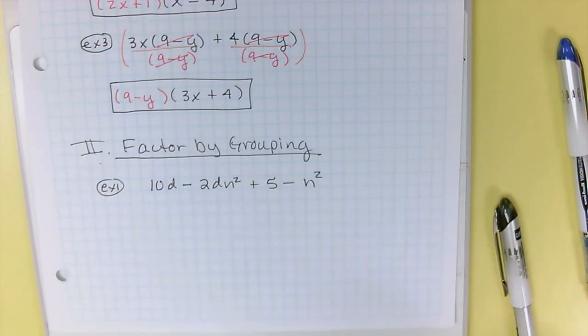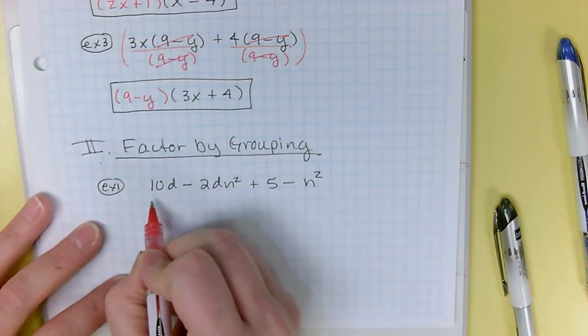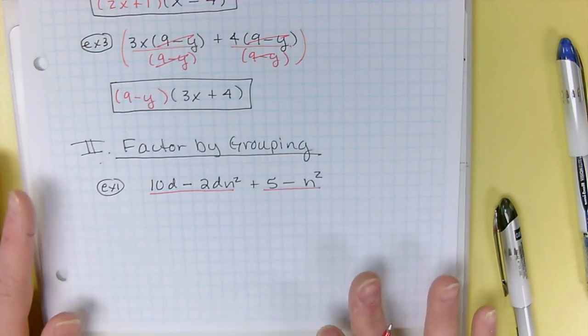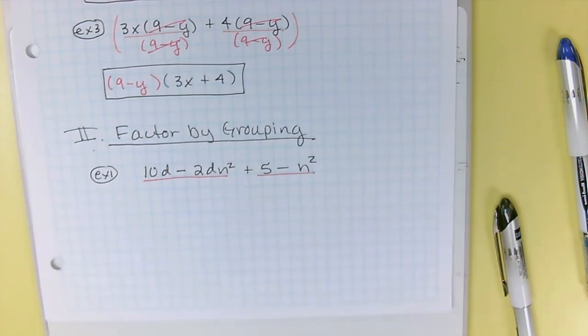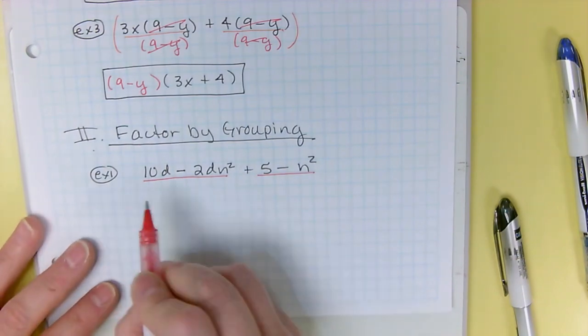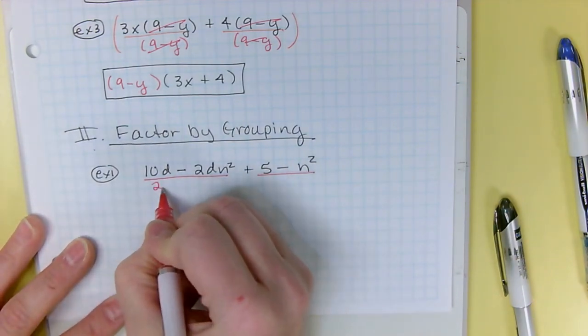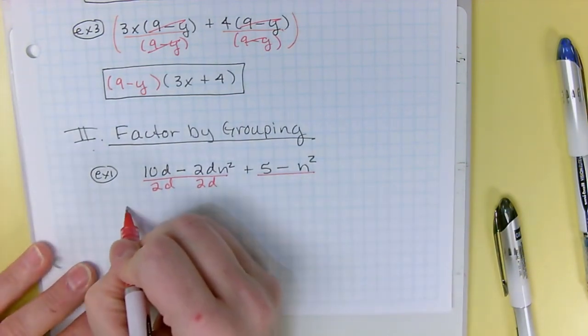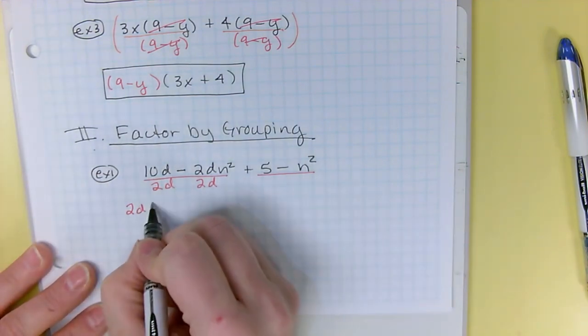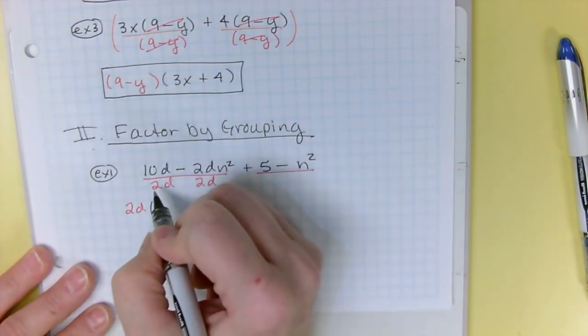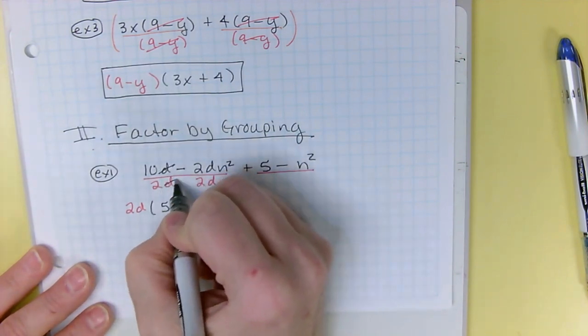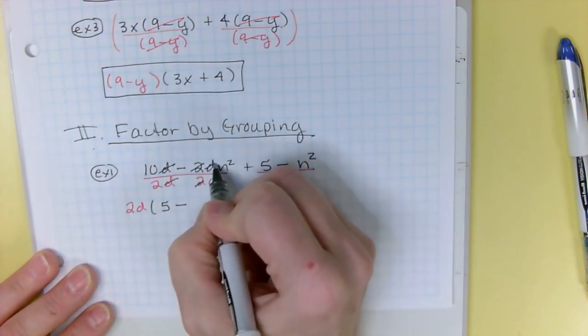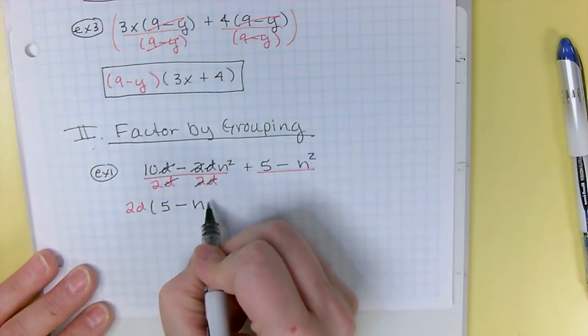Okay. The second thing you do is you group your pairs. So I've got one pair, I've got two pairs. That's why it's factor by grouping. And then from each pair, you divide out what the two terms have in common. So between a 10 and a 2, both of these have a 2, both of these have a d. So your 2d goes to the front, and 2 goes into 10 five times. The d's cancel, so all you have is a 5, minus the 2's cancel, the d's cancel, and all you have left is an n squared.